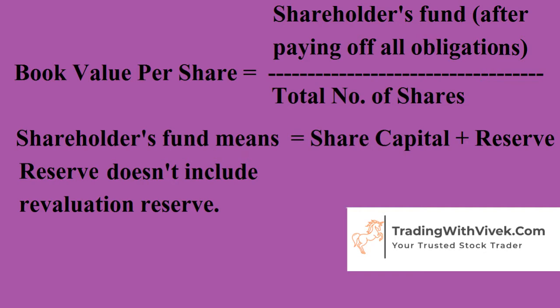It means whatever is the net worth of the company's shareholders needs to be divided by the total number of shares, and we will have the book value per share. By shareholders fund, we mean the total fund of the company after paying off all the obligations like debt or other liabilities.